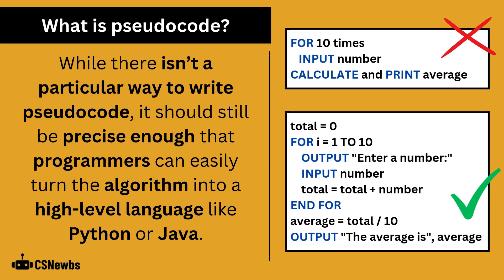The problem with the top pseudocode example here is that calculate is too vague and isn't actually a command. The pseudocode should show how the average would be calculated.